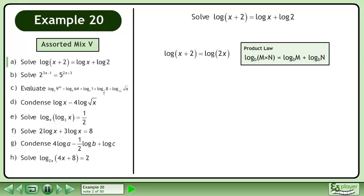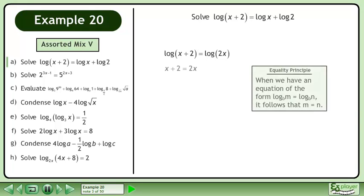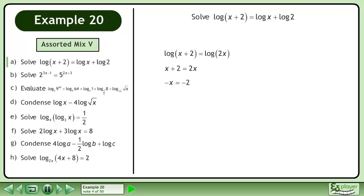Condense using the product law in reverse. By the equality principle, we have x + 2 = 2x. This gives us -x = -2. Divide both sides by negative 1 to get the answer, x = 2.